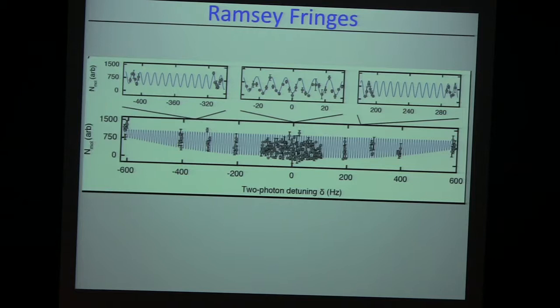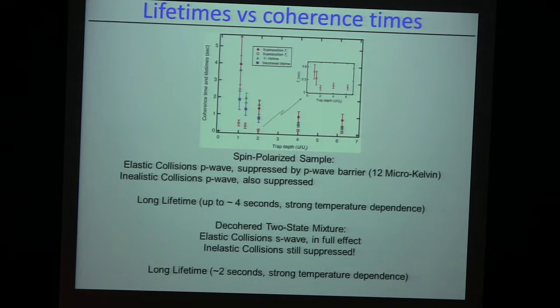Here's the same story in frequency space. You can either vary time in a Ramsey sequence or fix the time and vary frequency. You get beautiful Ramsey fringes, which allow you easily to detect a fraction — on the order of a few Hertz — of precision. This is a complicated slide that simply says: all these long coherence times go down as you increase both the density and the temperature of the gas. We interpret this so far as an activation of the P-wave-mediated loss process.